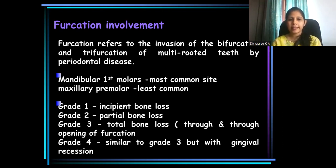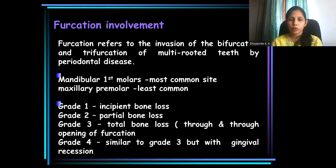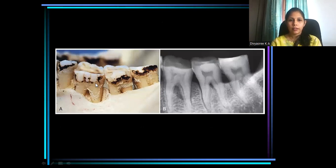Grade 1 means incipient bone loss. In Grade 2, there will be partial or initial stage of bone loss. In Grade 3, there will be bone loss in the furcation area causing through-and-through opening of the furcation, but there won't be any soft tissue loss. In Grade 4, there is through-and-through involvement along with soft tissue loss. Classic instruments are available for clinical examination of furcation, and furcation involvement can also be identified under a radiograph.